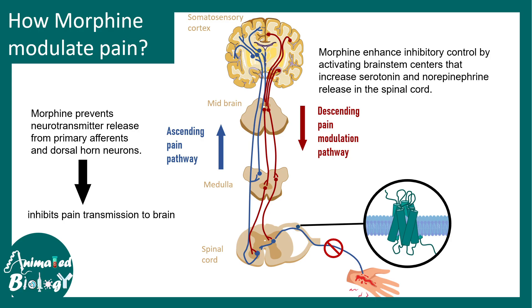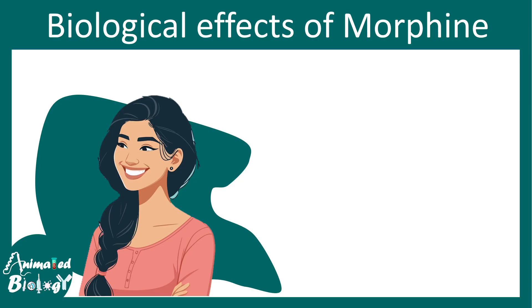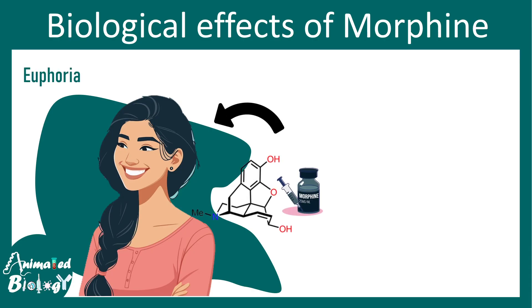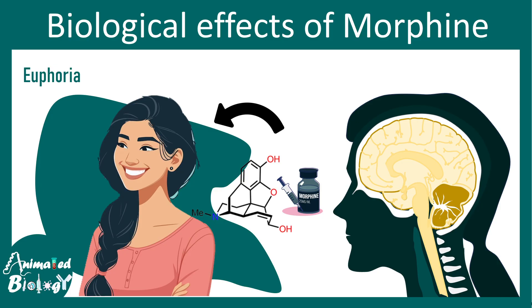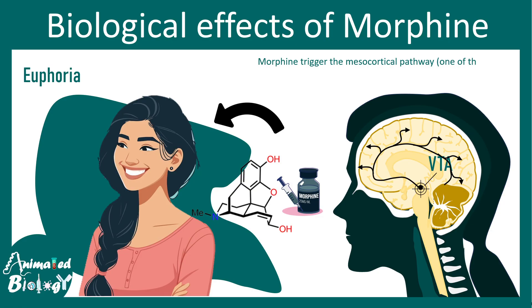Morphine also enhances inhibitory control on this circuit by positively regulating the descending pathway. Other effects of morphine include euphoria — that means a feeling of happiness. This happens because there is an area in the brain known as the ventral tegmental area, which has a dopaminergic pathway known as the mesocortical pathway. Dopaminergic neurons from this area project to several parts of the cortex, and increased dopamine release gives you that feeling of satiety and euphoria.